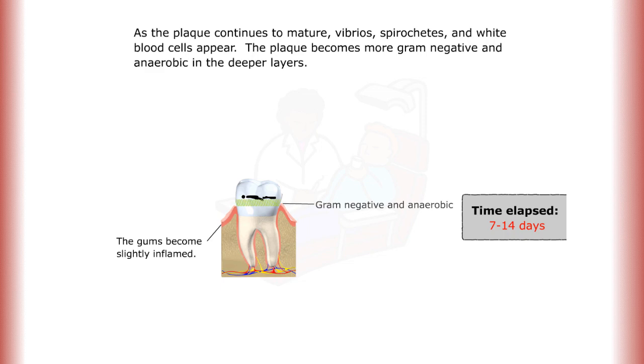Vibrios, spirochetes, and white blood cells appear. The plaque becomes more gram-negative and anaerobic in the deeper layers.